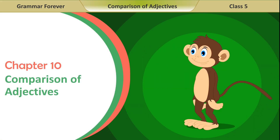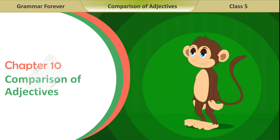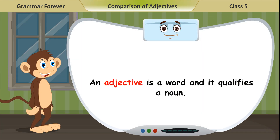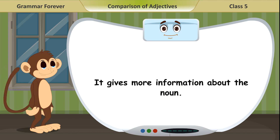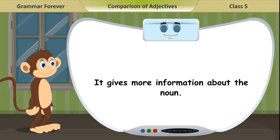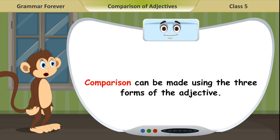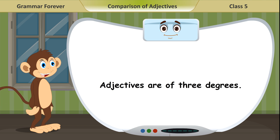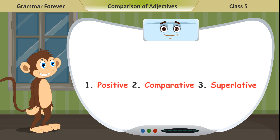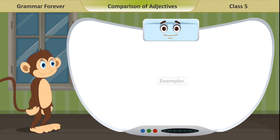Chapter 10: Comparison of Adjectives. An adjective is a word that qualifies a noun — it gives more information about the noun. Comparison can be made using the three forms of the adjective. Adjectives are of three degrees: 1. Positive, 2. Comparative, 3. Superlative.